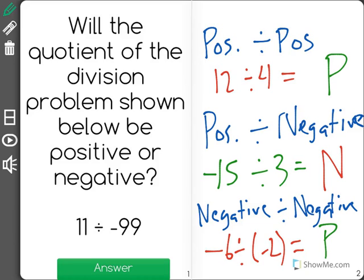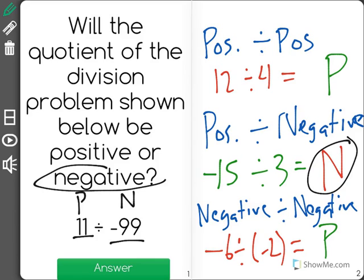So let's look at what we have here. We have 11, which is a positive, and negative 99, which is a negative. One positive and one negative leads us to a negative answer. Negative is correct in this case.